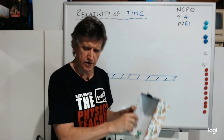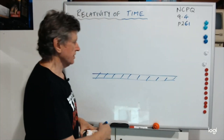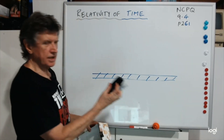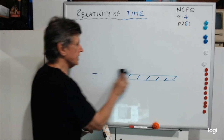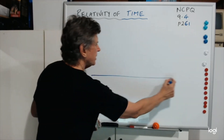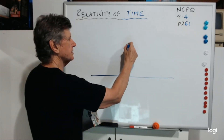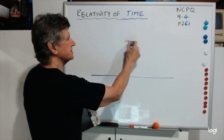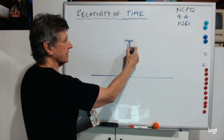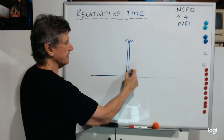Now you could draw it on your diagram something like this — instead of using a train track, I'll just do a straight line across there. There's the mirror, there's the pulse of light going up, and there it is coming back down.